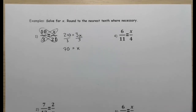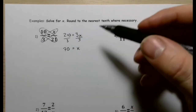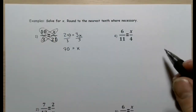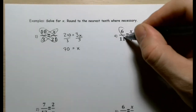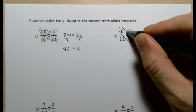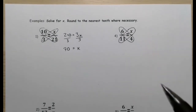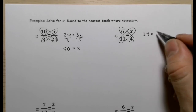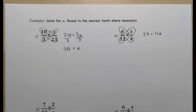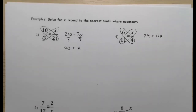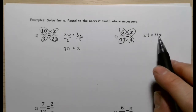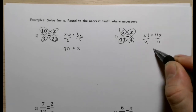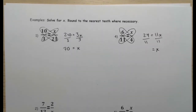Next: six-elevenths equals x over 4. We multiply across the equality: 6 times 4 is 24, and 11 times x is 11x. I can't simplify further, so I write out the multiplication. Then I divide both sides by 11. The question says round to the nearest tenth where necessary — this turns out to be approximate, not exact. 24 divided by 11 rounds to approximately 2.2.